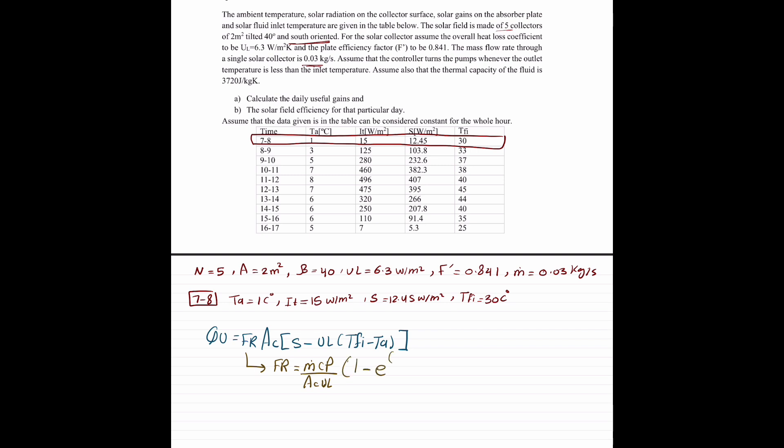FR is equal to mass flow rate times CP over AC UL times 1 minus E to the power of negative AC UL F prime over M CP. So we have a straightforward substitution.